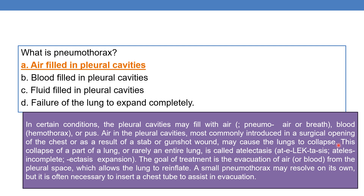Atelectasis comes from 'ateles' meaning incomplete, and 'ectasis' meaning expansion or dilation. So atelectasis is incomplete expansion or dilation — the failure of a lung to expand or dilate completely. Pneumothorax can lead to atelectasis. The goal of treatment is evacuation of air from the pleural space to allow the lung to reinflate. A small pneumothorax may resolve on its own, but it is often necessary to insert a chest tube to assist in evacuation.